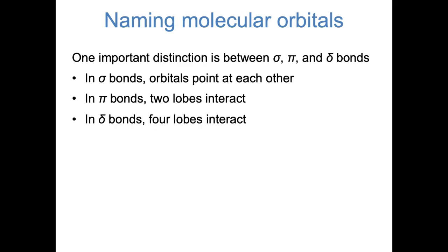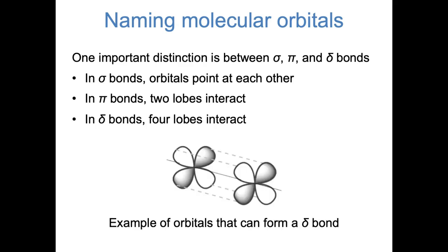Delta bonds involve four lobes of each atomic orbital interacting. Usually you see delta bonds when looking at atomic d orbitals, because we don't often talk about f orbitals. In this case, you have a face-on interaction where all four lobes of each d atomic orbital are interacting with each other.